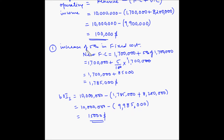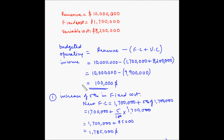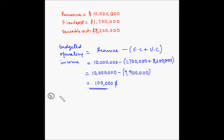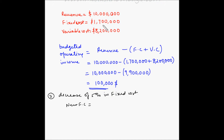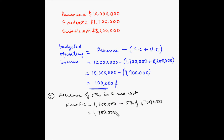Now let's look at the second case where we are decreasing the fixed cost by 5%, which means our budgeted operating income should increase. The new fixed cost will be equal to the original fixed cost of 1.7 million dollars, minus 5% of 1.7 million dollars, because we are decreasing. So this equals 1,700,000 minus 5 divided by 100 multiplied by 1,700,000.